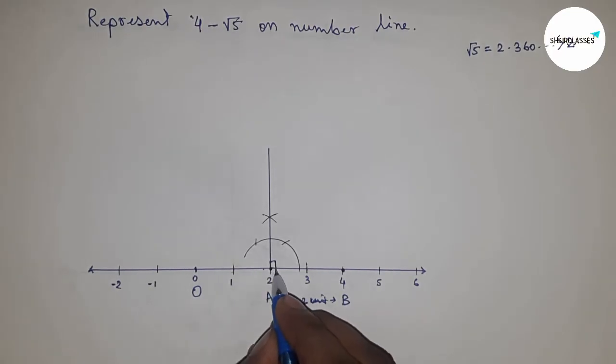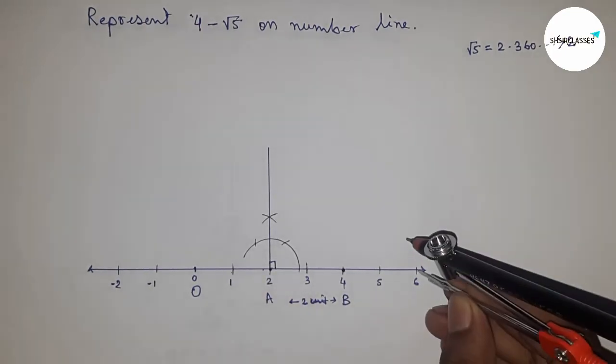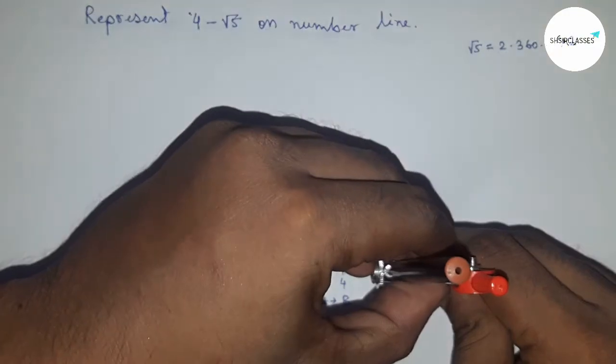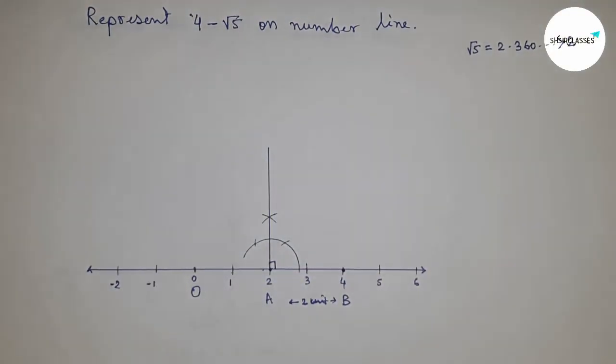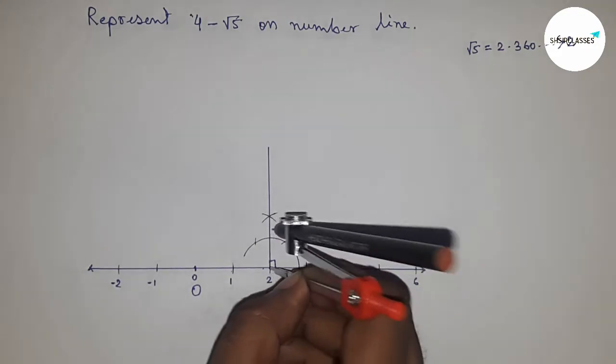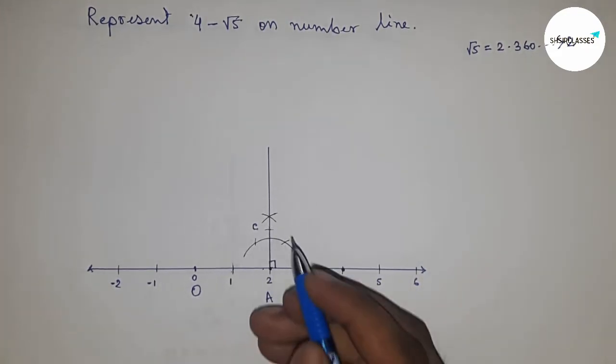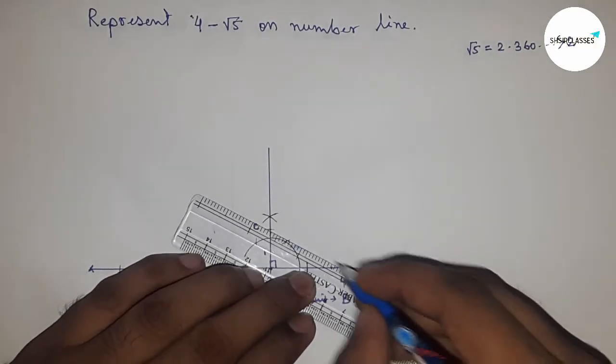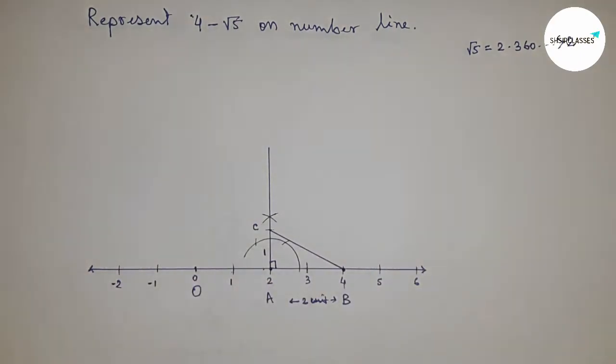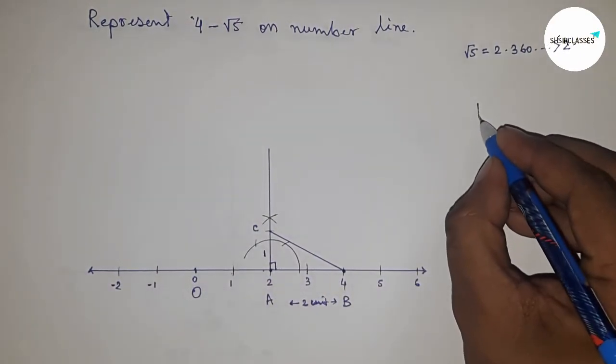Next, take the length between any two numbers - this is unit length, that means one unit - and cut the line this way. This is point C, and this is one unit. Next, join C and point B.